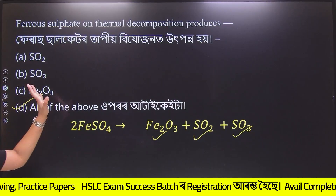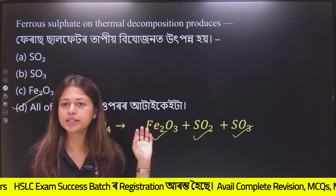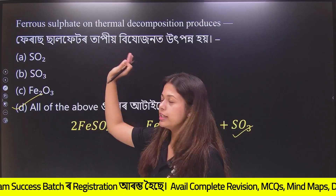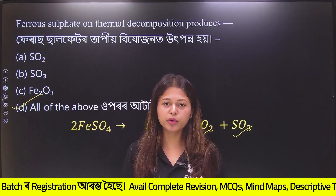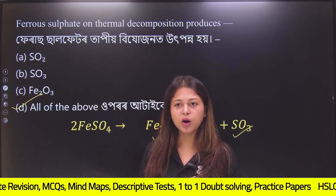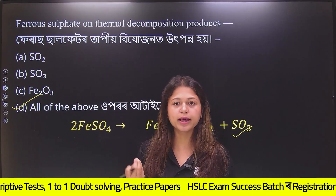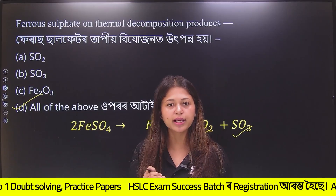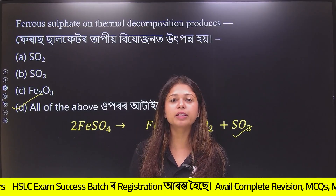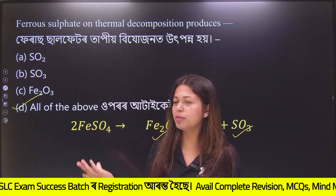The products are Fe2O3 and SO2. All of these are evolved, which means the option is correct. If you are not aware of SO2, you have to look at all the options and pick up the correct one. Because you don't want to forget about it.